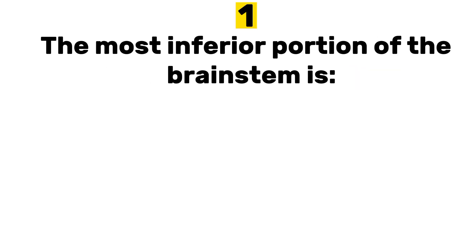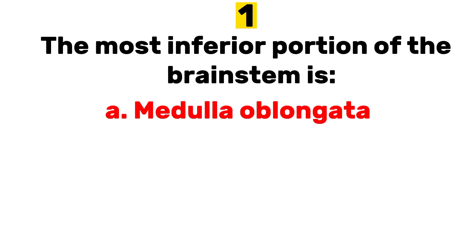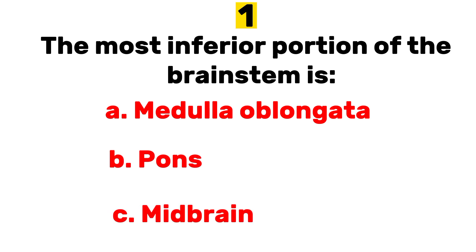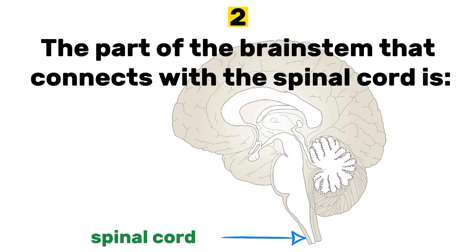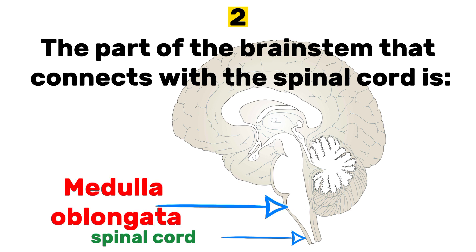Number one: the most inferior portion of the brain stem is — a) medulla oblongata, b) pons, c) midbrain. Answer: a) medulla oblongata. Number two: the part of the brain stem that connects with the spinal cord is — medulla oblongata.